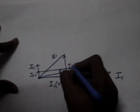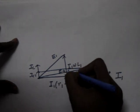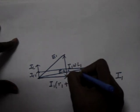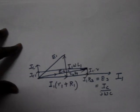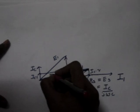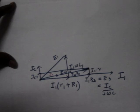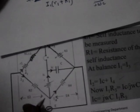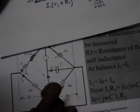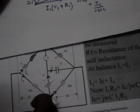Now E4 is equal to I4 R4. So this one is I4. This I4 is equal to sum of I2 plus Ic.